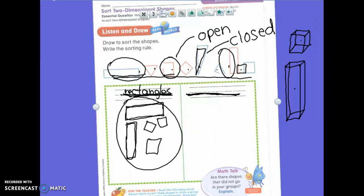So how many shapes do we have here in our rectangles? Four. You should have four.